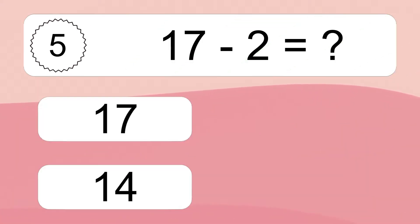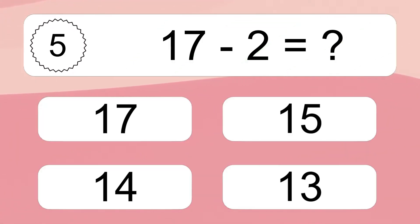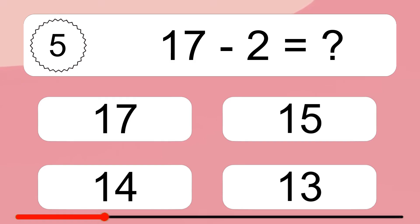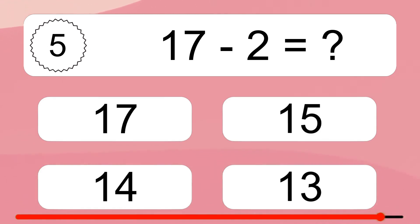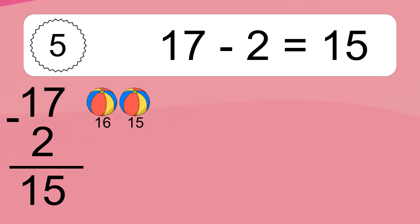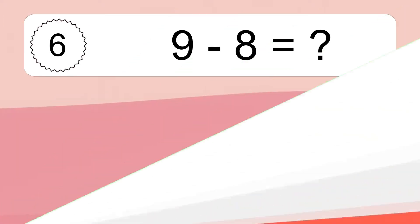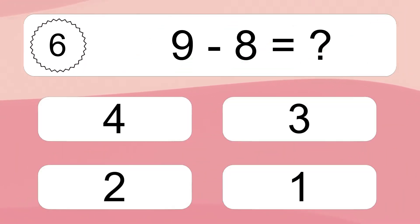17 minus 2 equals what? 17 minus 2 equals 15. Let's count it: 16, 15.